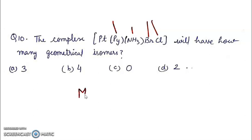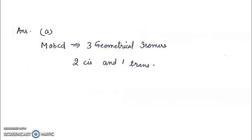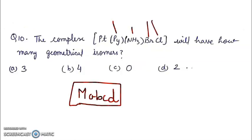So, this compound will have metal ion and 4 other ligands A, B, C, D. This type of compound may have 3 geometrical isomers, 2 cis and 1 trans. So answer will be A: 3. This compound has 3 geometrical isomers.